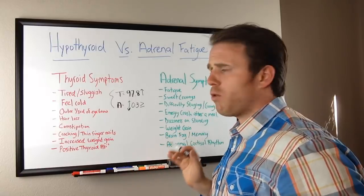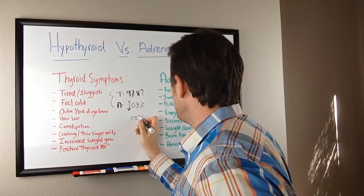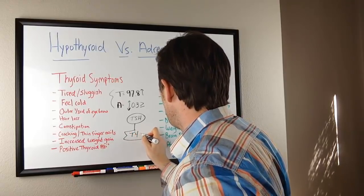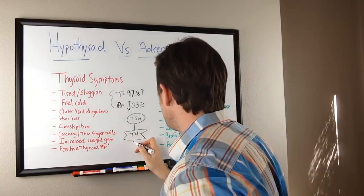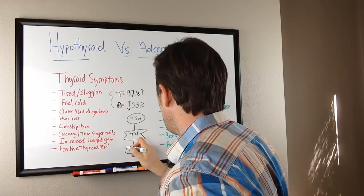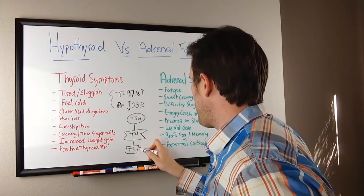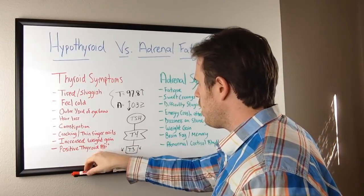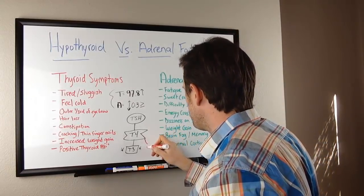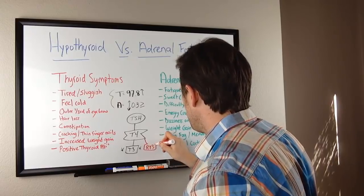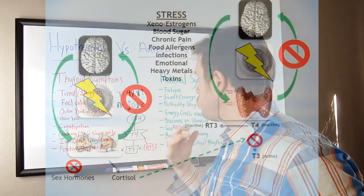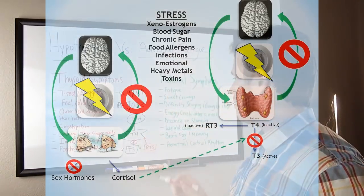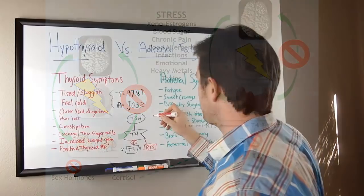Your adrenals and thyroid are connected. Simply put: TSH is a brain hormone that gets released and travels down to your thyroid, stimulating it to make T4. T4 then gets converted into T3, which is your active thyroid hormone — T4 itself is inactive. Now, if we have too much cortisol, it drives T4 into reverse T3 instead, and reverse T3 actually slows down your metabolism. So too much cortisol produces reverse T3, and it also suppresses TSH.